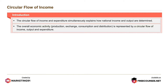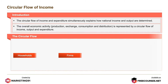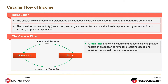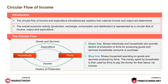In the circular flow, the green line shows individuals and households who provide factors of production to firms for producing goods and services. Households consume or purchase. The blue line shows household spending on goods and services produced by firms. The money spent by households is then used by firms to pay the former for their labour via income.